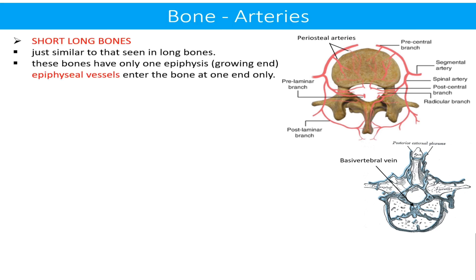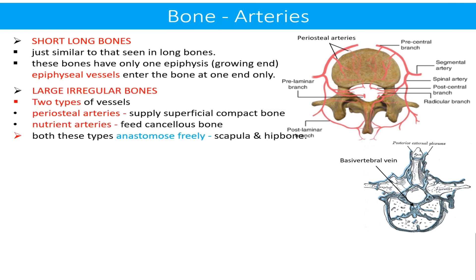Regarding arteries of bones other than long bones: first, short long bones — the arteries of these bones are similar to those seen in the long bones, but these bones have only one set of epiphyseal vessels as they have only one epiphysis. For large irregular bones, there are two sets of vessels: periosteal arteries supply the superficial compact bone, whereas the nutrient artery feeds the cancellous bone. Both types of arteries anastomose freely with each other, as seen in the scapula and hip bone.